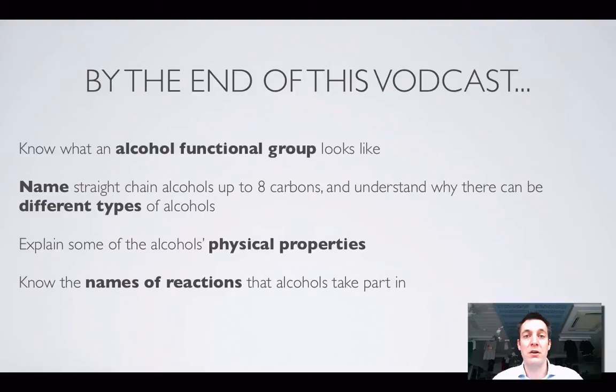We're going to start by looking at alcohols, and by the end of this film you'll know what the functional group looks like. You'll be able to name straight-chain alcohols with up to eight carbons and understand why there are different kinds of alcohols. You'll be able to look at the structure of alcohols and use it to explain their physical properties, and also know the names of some reactions that alcohols take part in.